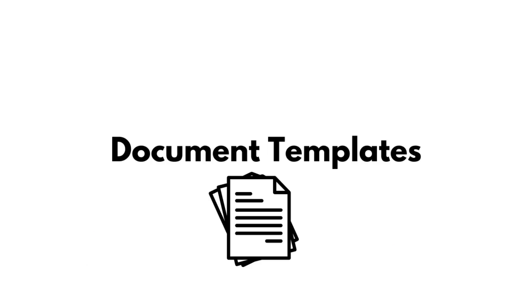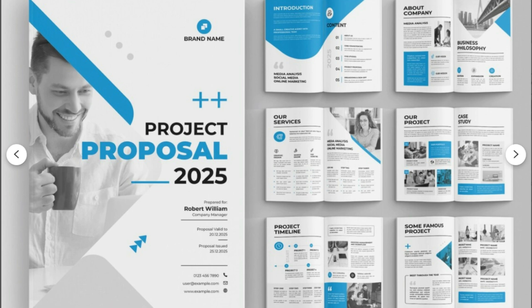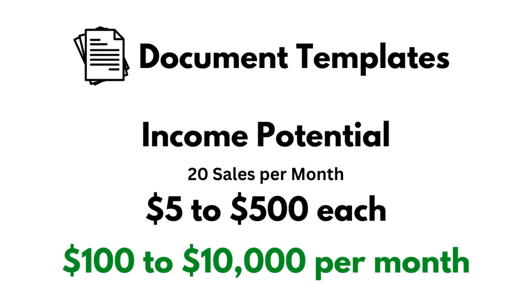This next digital product idea is great for all my corporate ladies, and that is document templates. These can be anything from invoice templates, contract templates, SOP templates, proposal templates, and grant writing templates. If you have a skill set in creating these types of documents, you can sell them as a template. This digital product idea has a wide price range — I've seen them sell anywhere between $5 per template up to $500 per template, bringing in a monthly income between $100 to up to $10,000 per month.